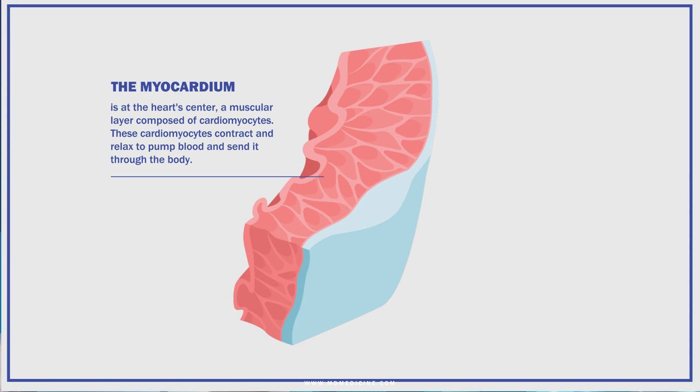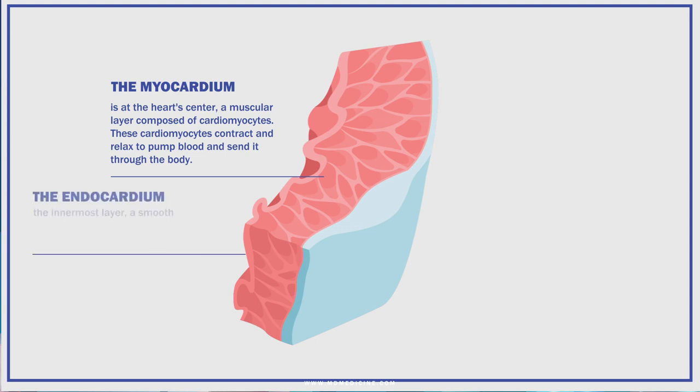Surrounding the myocardium are three distinct layers of tissue. The endocardium is the innermost layer, a smooth membrane responsible for lubricating and preventing circulation damage. The middle layer is the tunica media, composed of specialized muscle and elastic fibers.